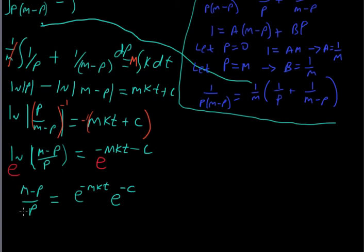Now that can become m over p minus 1 equals e to the negative m kt. And I'm actually going to take that constant, that right there, the e to the negative c. And I'm going to say that is a. Right, it's just a different constant a.